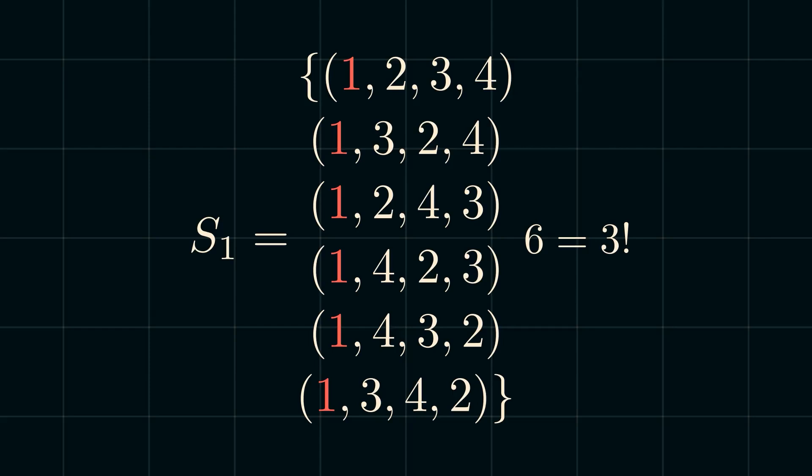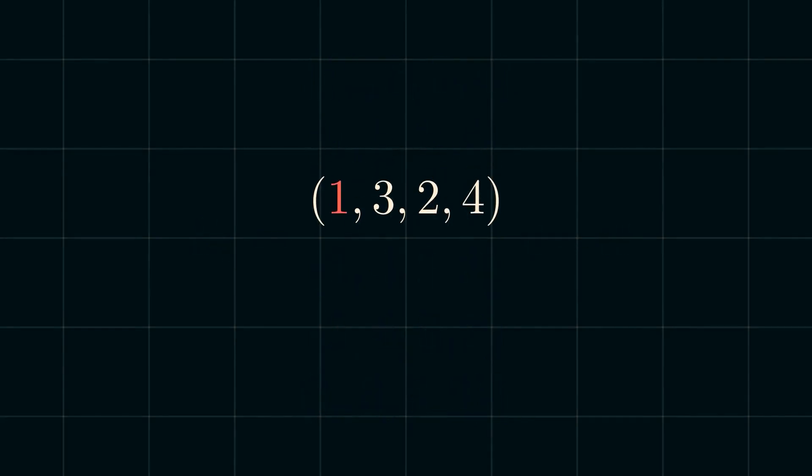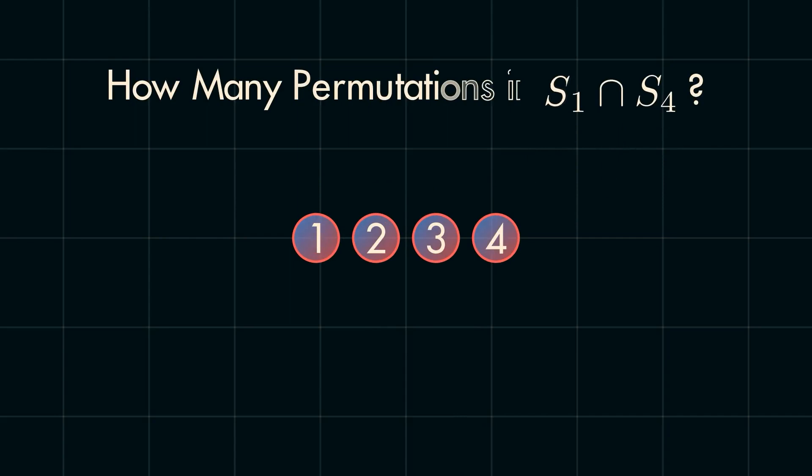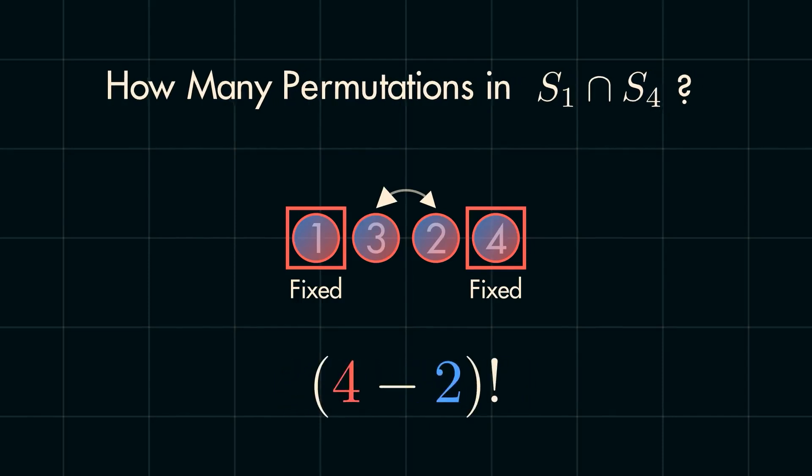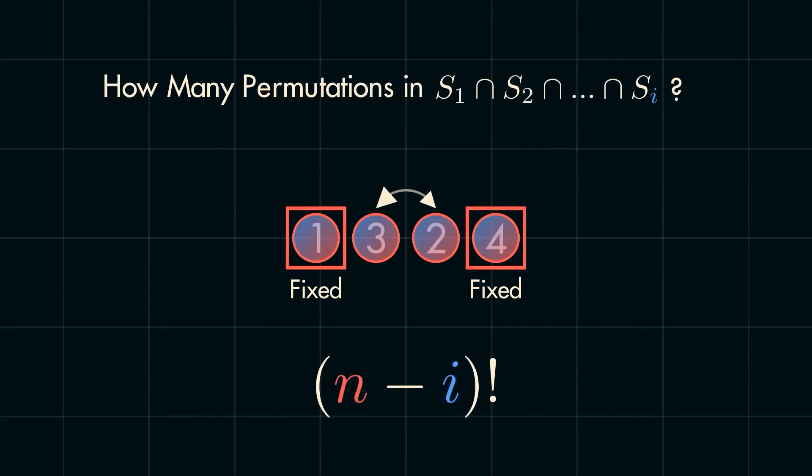You'll also notice that many of the elements in s sub 1 also fix other elements. For example, 1, 3, 2, 4 fixes 1 and 4. So, it would be in s sub 1 and s sub 4, further implying it is in the intersection of s sub 1 and s sub 4. With that in mind, think about how many permutations would be in the set s sub 1 intersect s sub 4. Recalling the example where only one element was fixed, the number of permutations was equal to 4 minus 1 factorial, or in general, n minus 1 factorial. Using the same thinking, the intersection of s sub 1 and s sub 4 are all permutations that fix 1 and 4. So, the total number of permutations that do this would be equivalent to the number of permutations of a set of two elements. Notice how every fixed element subtracts 1 from the amount inside the factorial, so s sub 1 intersects s sub 4 has 4 minus 2 factorial elements inside of it. So, with n elements and i fixed elements, there will be n minus i factorial number of permutations that fix the specified elements.